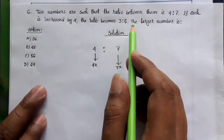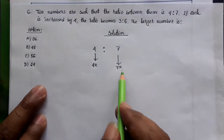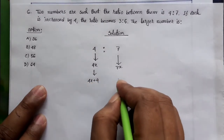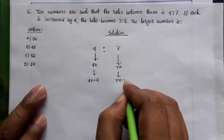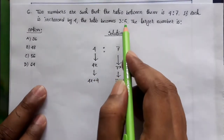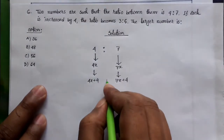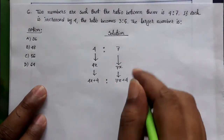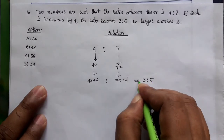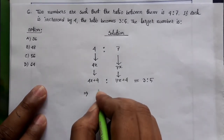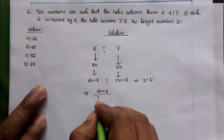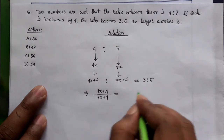If identity x is increased by 4, the ratio becomes 3 to 5. So, 4x plus 4 divided by 7x plus 4 equals 3 to 5. We set up the equation: 3 times 5 gives 5 times 4x plus 4 equals 3 times 7x plus 4.